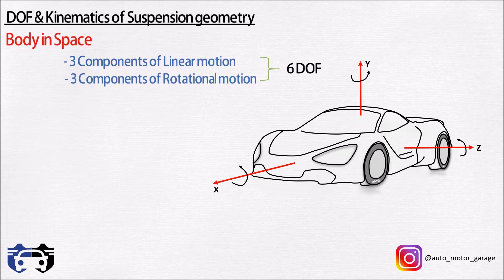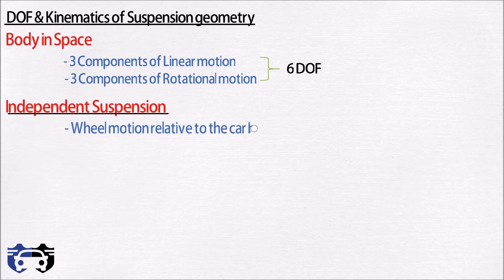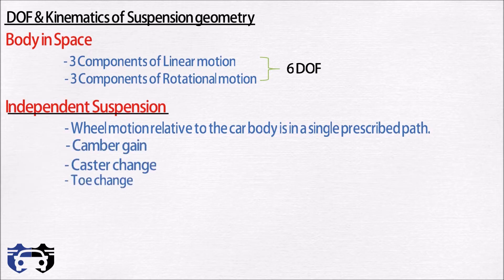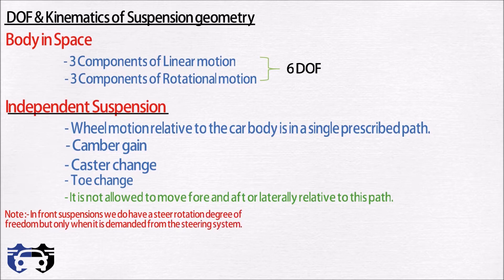For an independent suspension, the assembly of control arms is intended to control the wheel's motion relative to the car body in a single prescribed path. That path may have camber gain, caster change, and toe change as prescribed by the designer, but it still follows one path as it moves up and down. In engineering terms, we could say the wheel has a fixed path of motion relative to car body. It is not allowed to move fore and aft or laterally relative to this path. Note in the front suspension we do have the steer rotation degree of freedom, but only when it is demanded by the steering system. Another way to say the same thing is that the suspension provides five degrees of restraint.